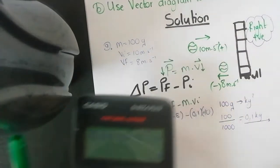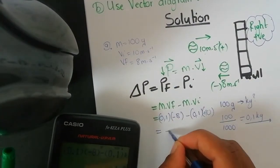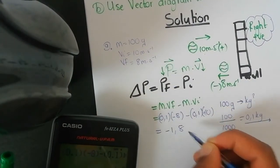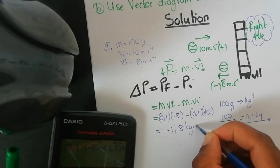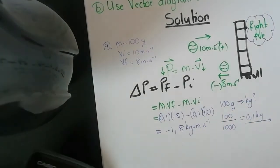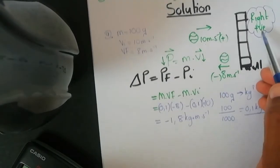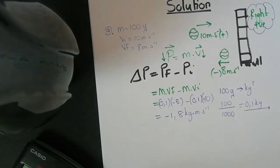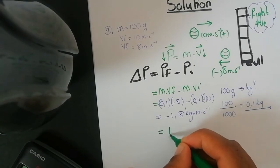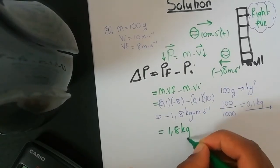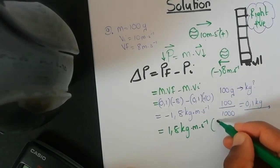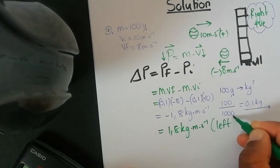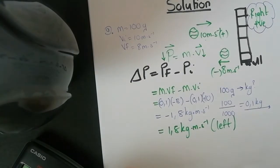The answer is negative 1.8. The unit is kilograms meters per second. Since right is positive and the result is negative, the change in momentum is 1.8 kilograms meters per second to the left.